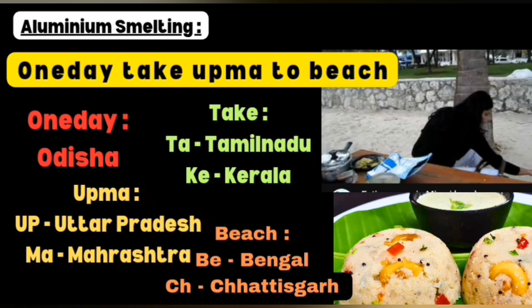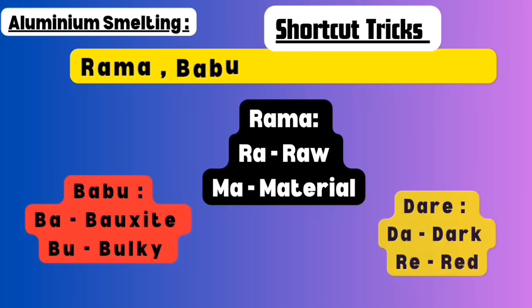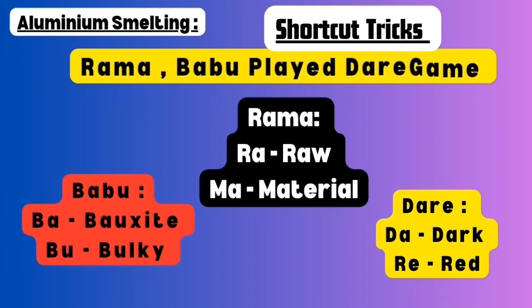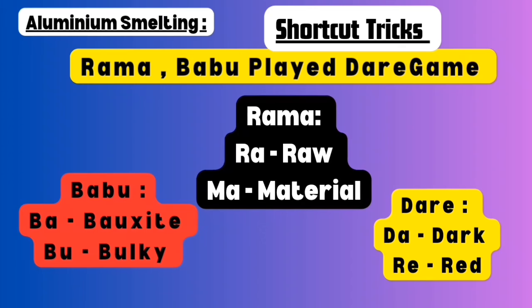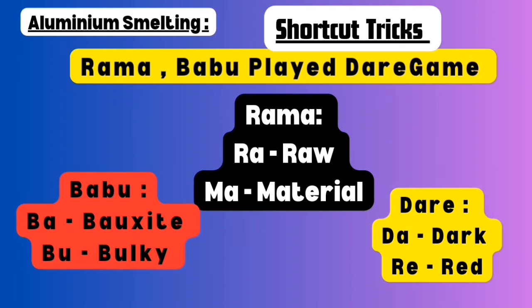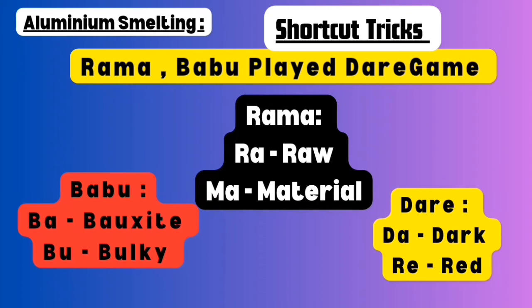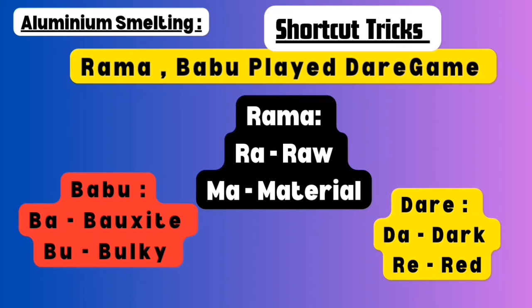The next sentence is: Rama and Babu played dar game. Take RAMA: RA refers to raw, MA refers to material — raw material. Take BABU: BA refers to bauxite, BU refers to bulky — bauxite is a raw material used in aluminium smelters and it is very bulky. Take DAR: DA represents dark, RE represents reddish color. So bauxite is the raw material, very bulky and dark reddish in color.